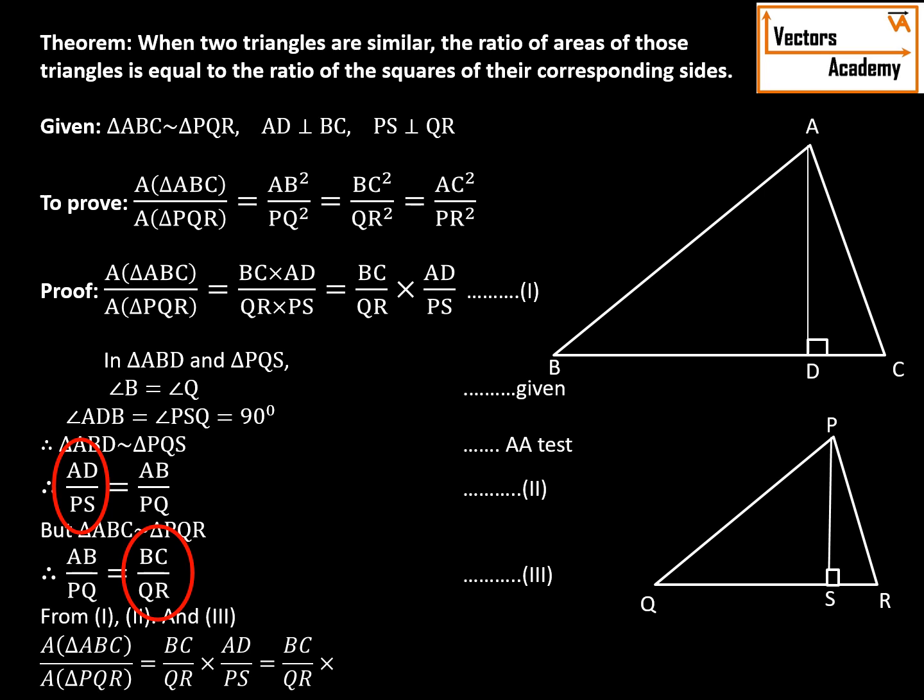So replacing AD upon PS with BC upon QR, I will get this. Now if you multiply both the ratios, BC into BC will give you BC² and QR into QR will give you QR². So we have proved that the ratio of the triangles is equal to the square of the ratios of their corresponding sides.